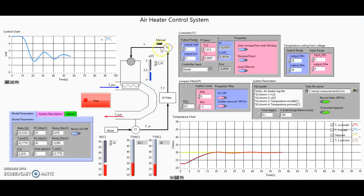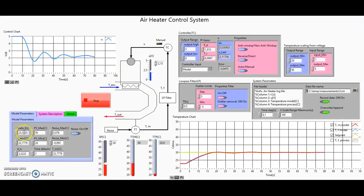Here we have a P&ID overview of the control system. There's the temperature sensor with some added noise; that signal goes to the low-pass filter, which goes to the temperature controller, which regulates the heating elements.